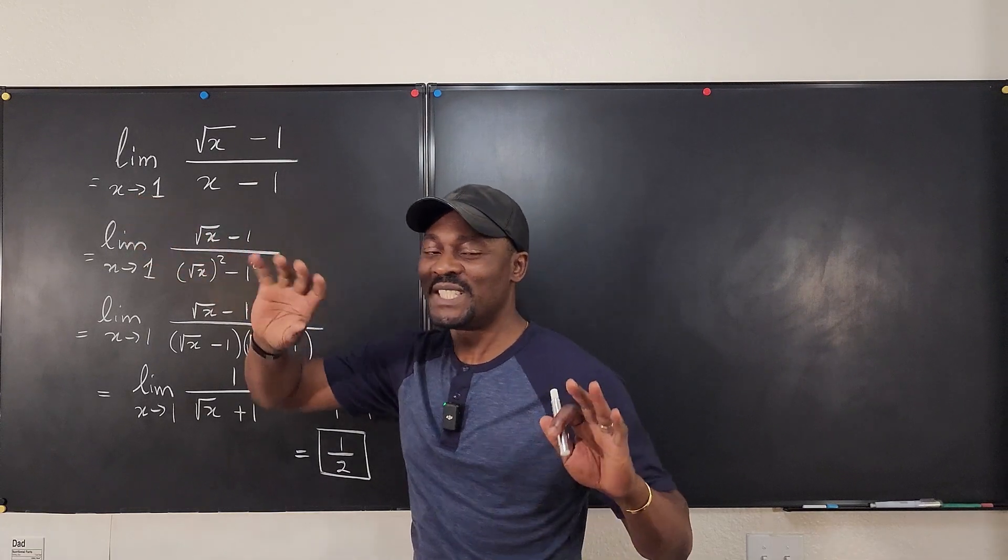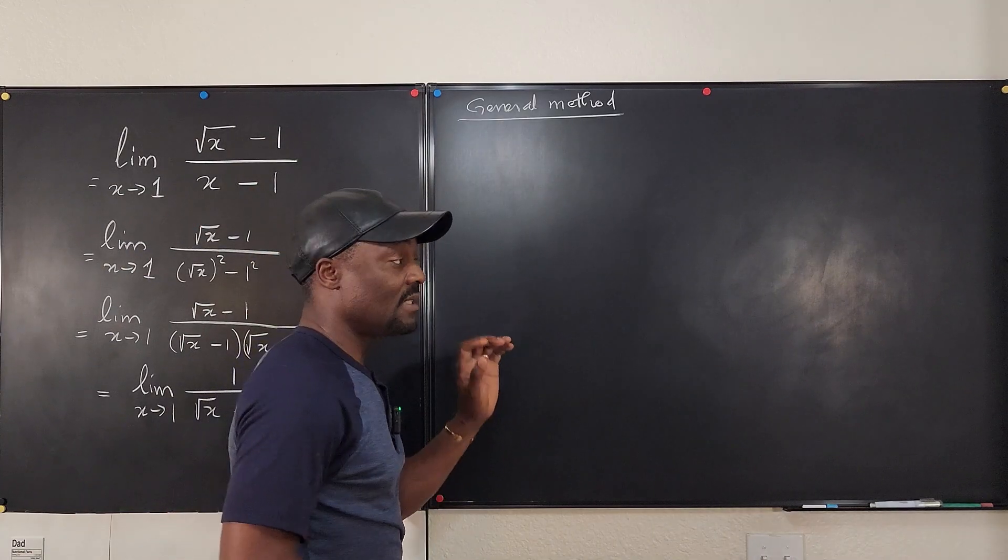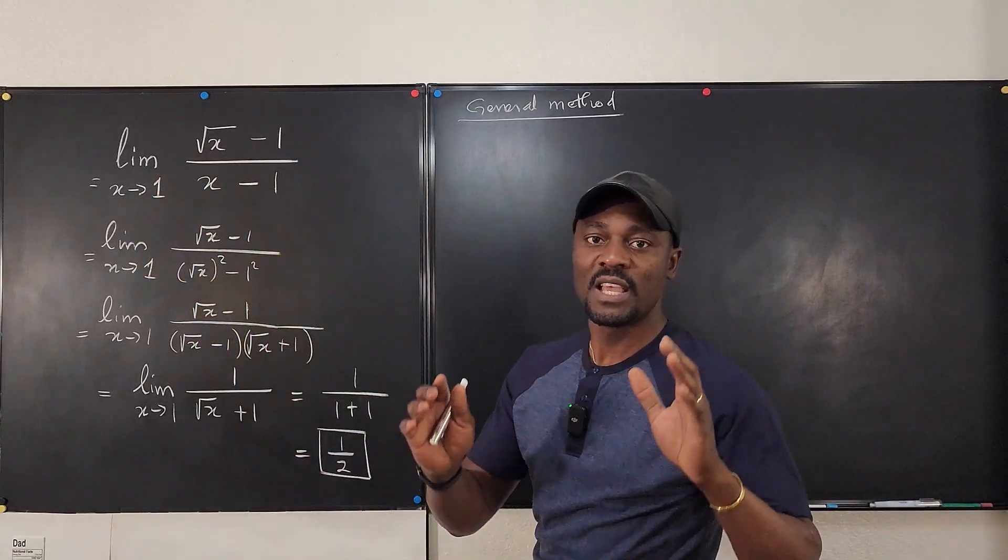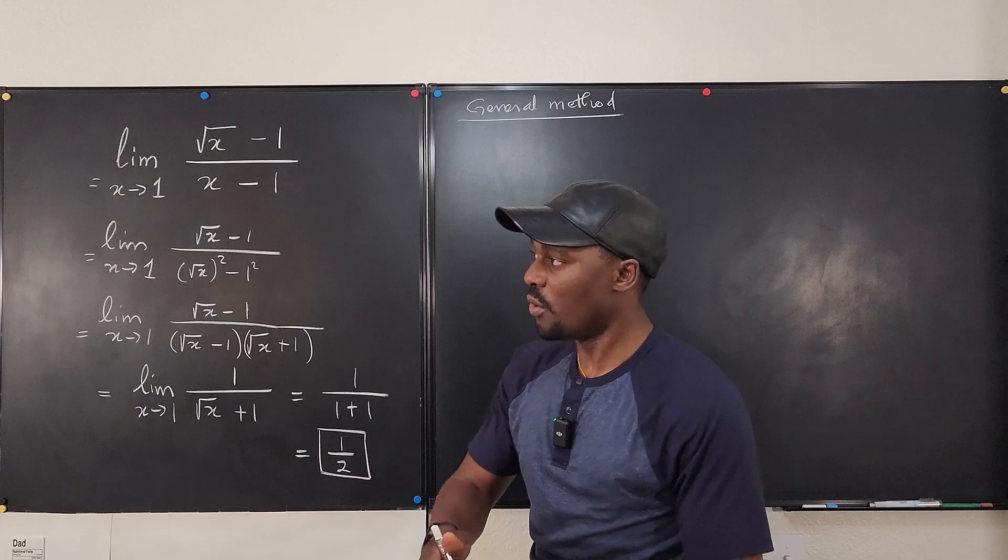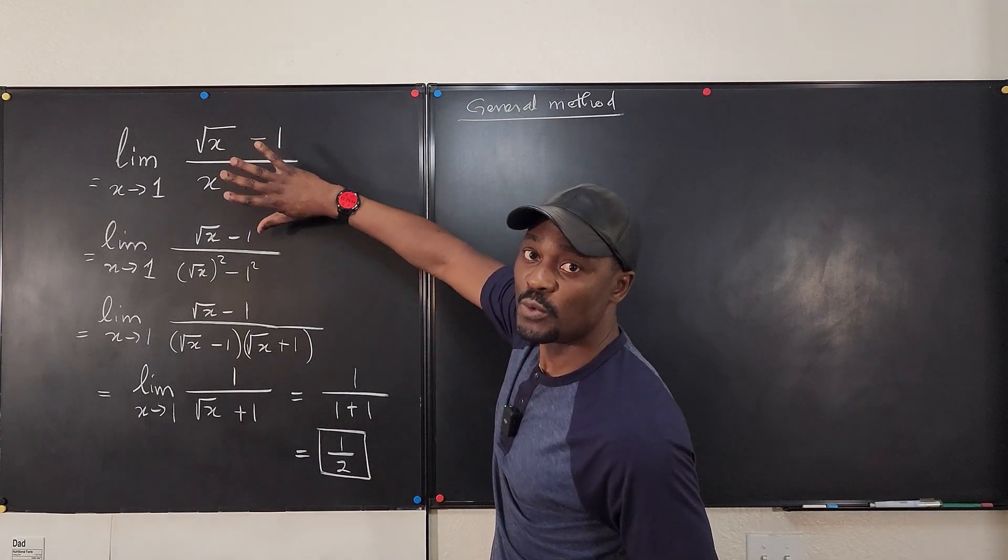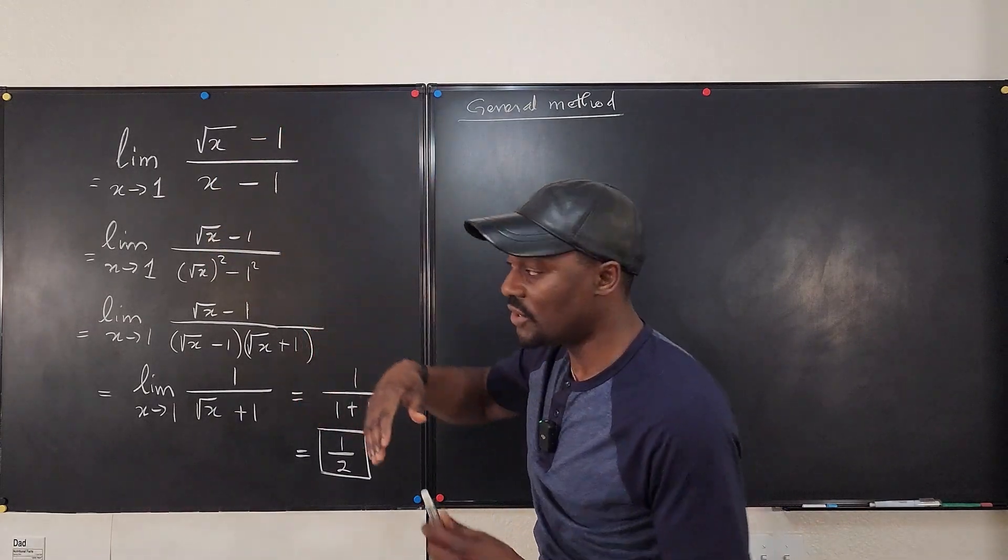Remember, if we were dealing with infinity, it would be a different strategy. So the general method says whenever you have a radical and this is finite, always rationalize the radical. So whatever this is, if this was in the bottom here, what you want to do is you want to rationalize. If it's at the top, you rationalize also.